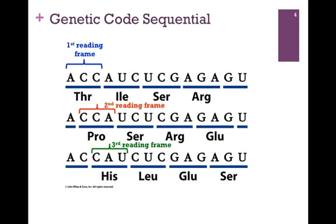We may move to the third nucleotide and begin there, and our third reading frame begins with the codon CAU. In this case, a different sequence of codons produces a different sequence of amino acids: histidine, leucine, glutamate, and serine. So for each mRNA transcript, there are three possible reading frames, because our codon contains three nucleotides. It is important not only that we have the correct transcript, but where we begin will determine the sequence of codons and therefore the sequence of amino acids.